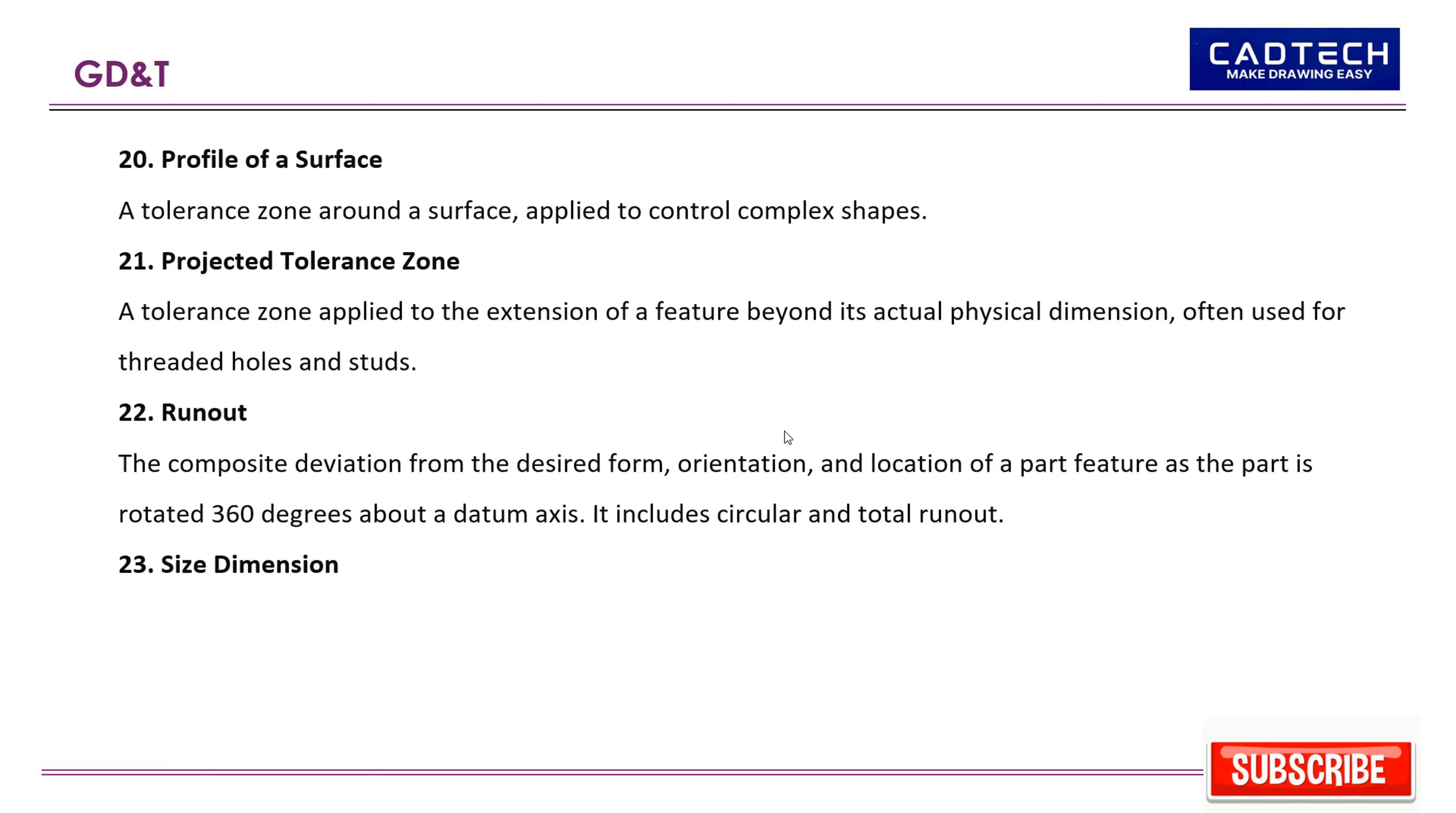23. Size dimension: A dimension that defines the size of a feature, such as a diameter or length. 24. Straightness: A condition where all points on a feature are in a straight line.